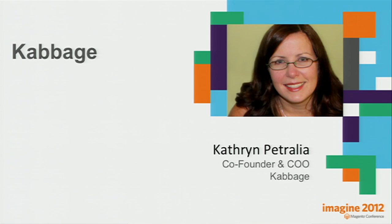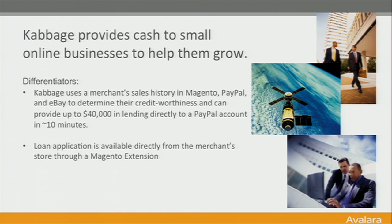I know we're a bit over time. We have one last demo, and this is one of my favorite stories. Cabbage does small business financing — based off of your actual sales through your Magento store, through PayPal, through eBay, they determine your credit worthiness and can fund you up to $40,000 in about 10 minutes directly into your PayPal account. Small business financing is now personal and immediate. I'll turn it over to Catherine.